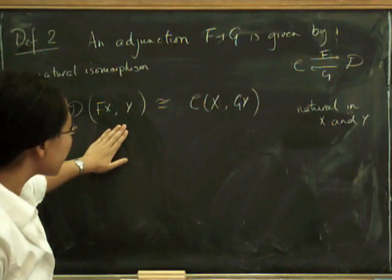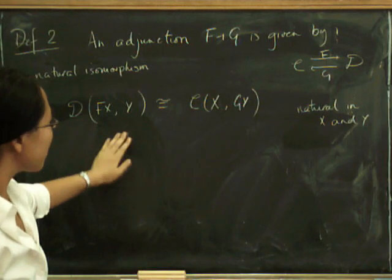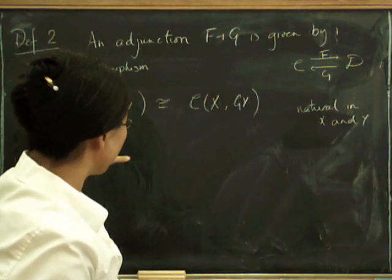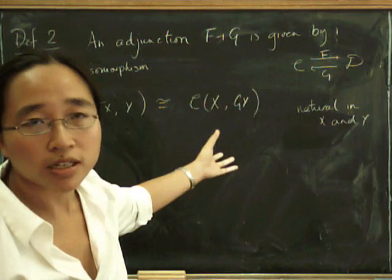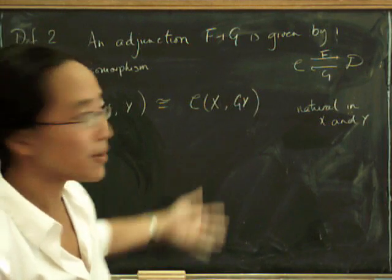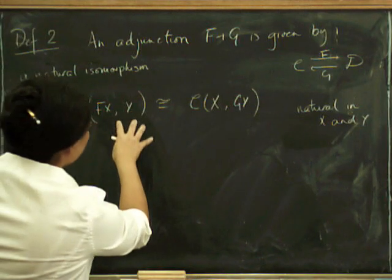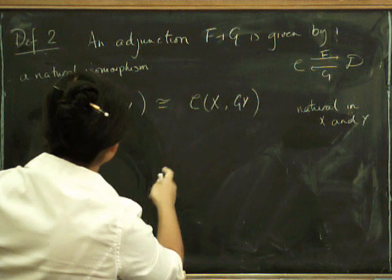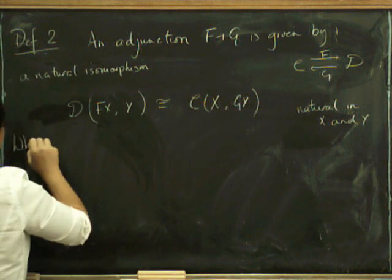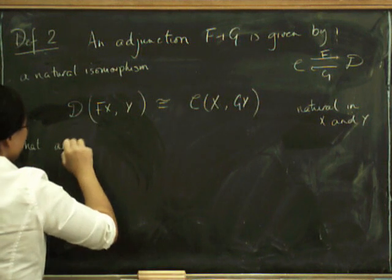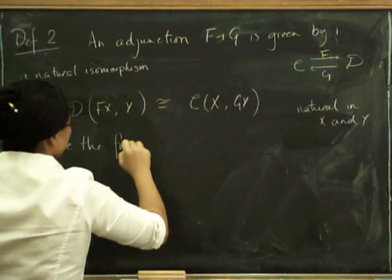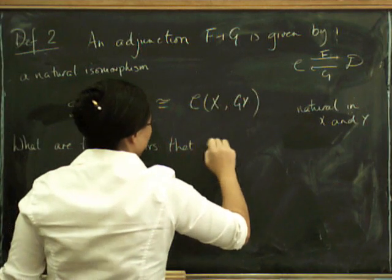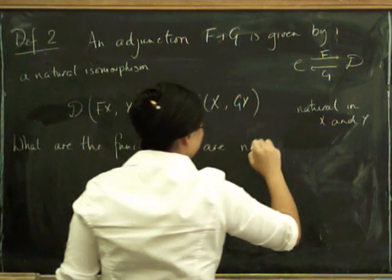This is a short way that we sometimes talk about natural isomorphisms when we can't be bothered to say exactly what the functors are because it can be a bit tedious. But if you look at this carefully, this is actually describing a functor in X and it's also describing a functor in Y. So what are the functors that are naturally isomorphic here?